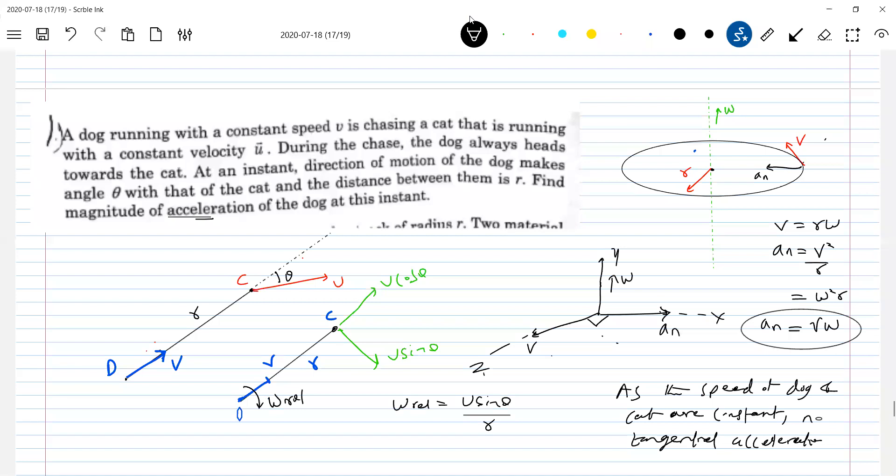Then what is the tangential? What should be the normal acceleration? The normal acceleration definition should be equal to v into omega relative. So this should be equal to v u sine theta by r. So you can also call this as total acceleration. Nothing wrong. Good idea.